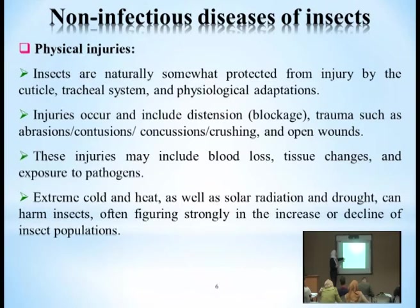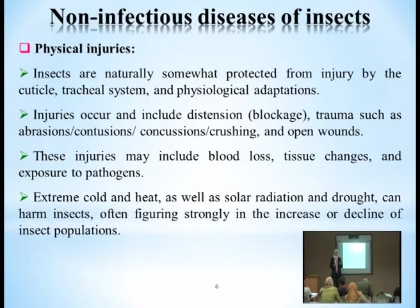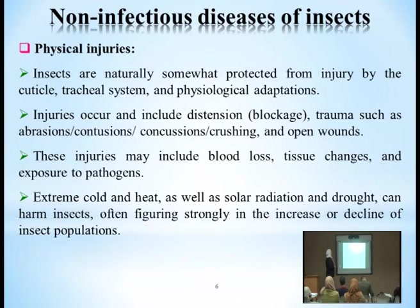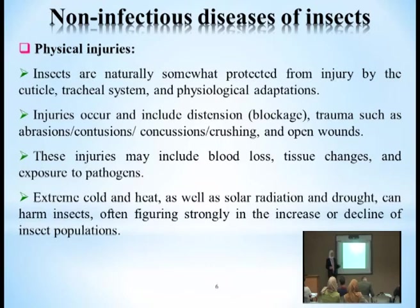Physical injuries can allow pathogens to enter, similar to what happens with secondary disease in plants where a primary injury weakens the immune system. Extreme cold, heat, solar radiation, and drought can also harm insects and strongly influence increases or declines in insect populations. These abiotic factors affect insect populations and are related to what we call K-factors in population dynamics.